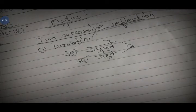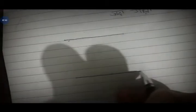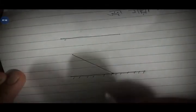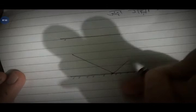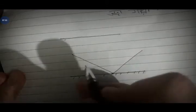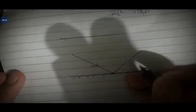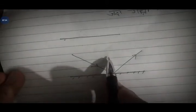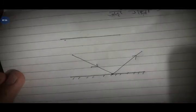This is a plane mirror. Using a plane mirror, there is light on the incident ray and a reflected ray. The plane is perpendicular and we draw the normal.